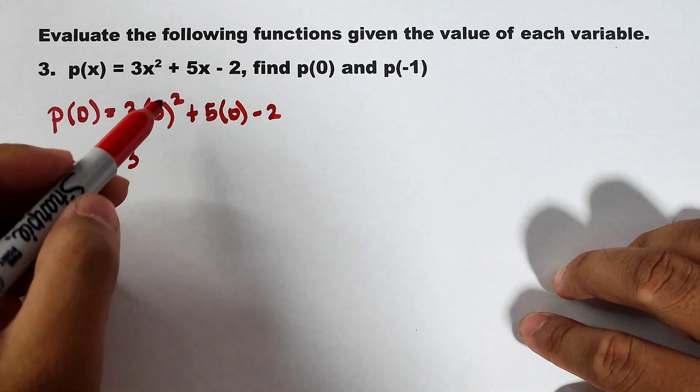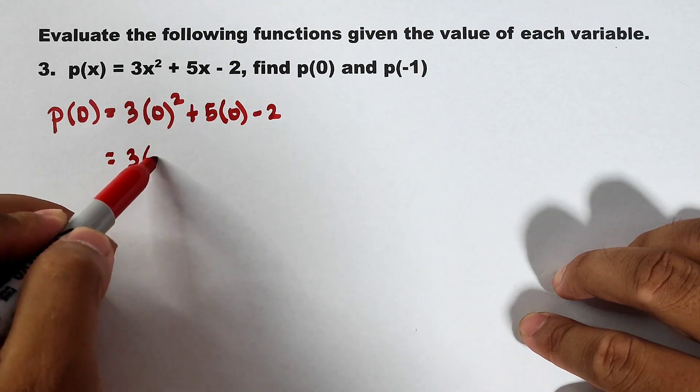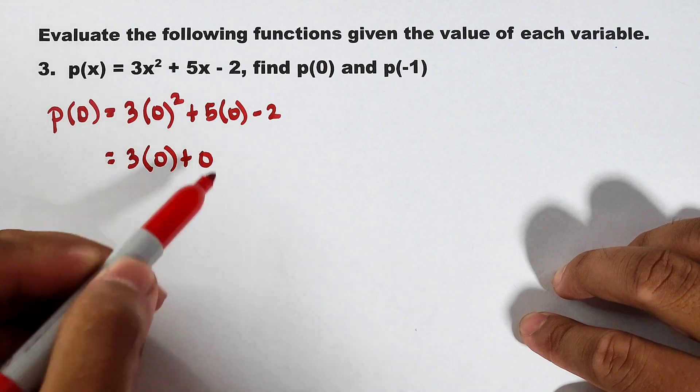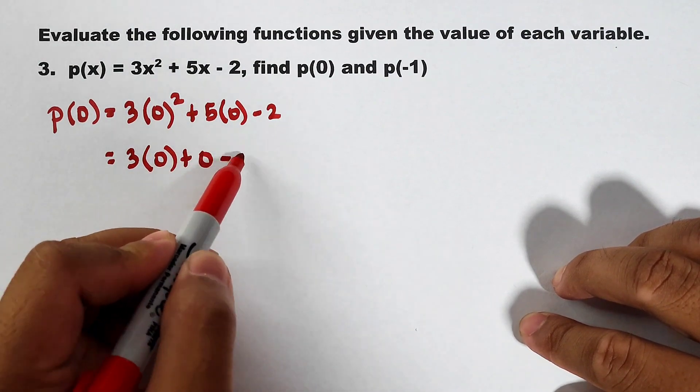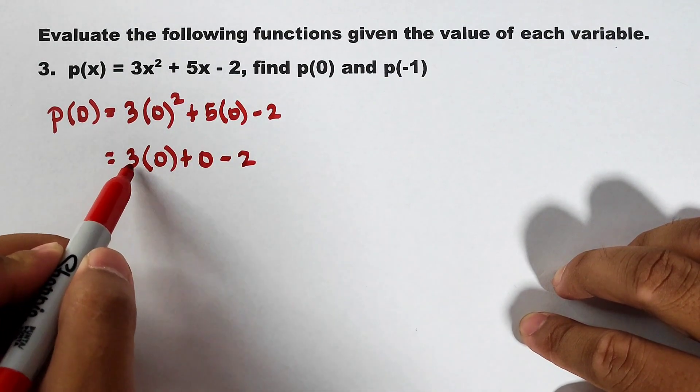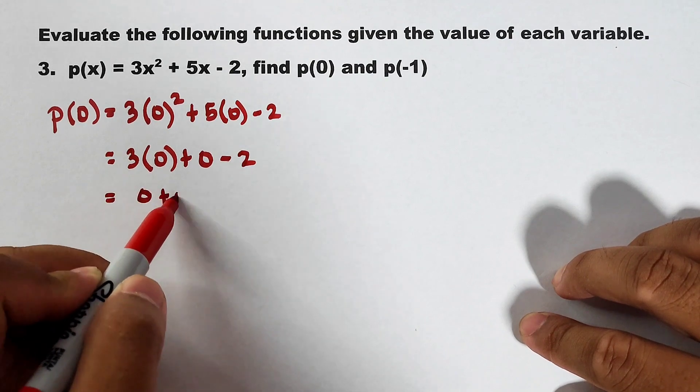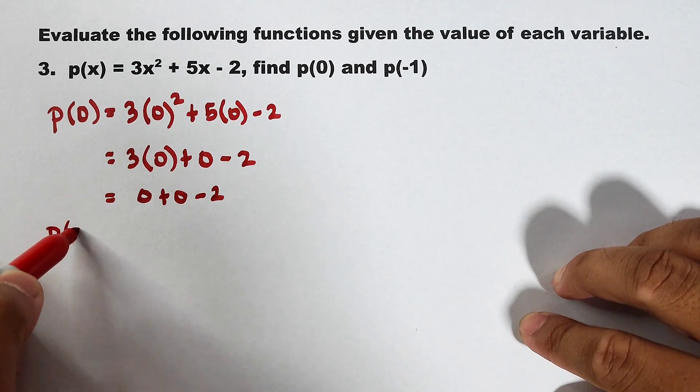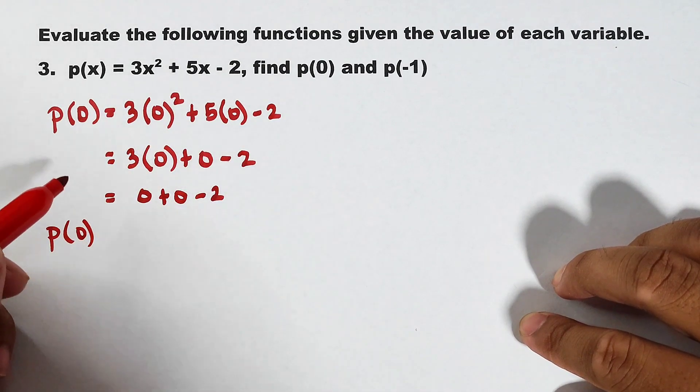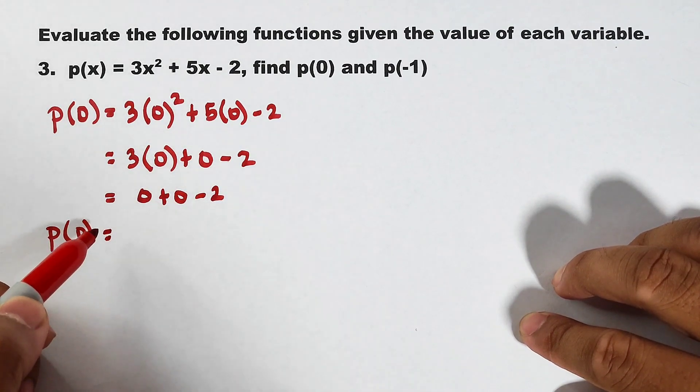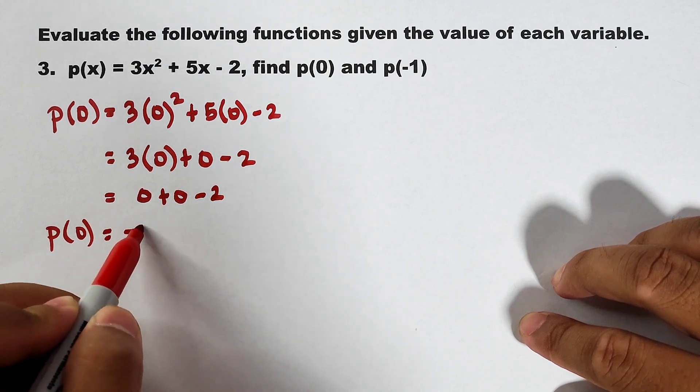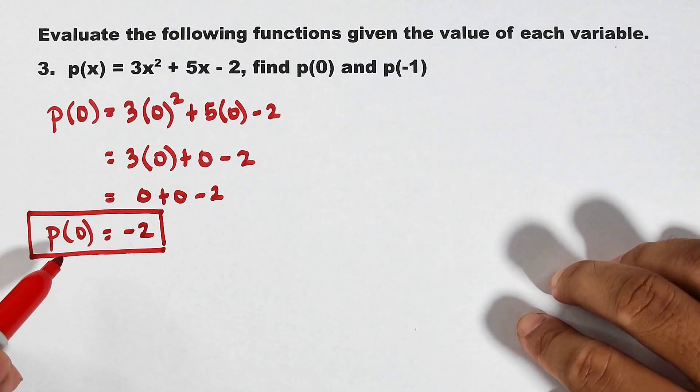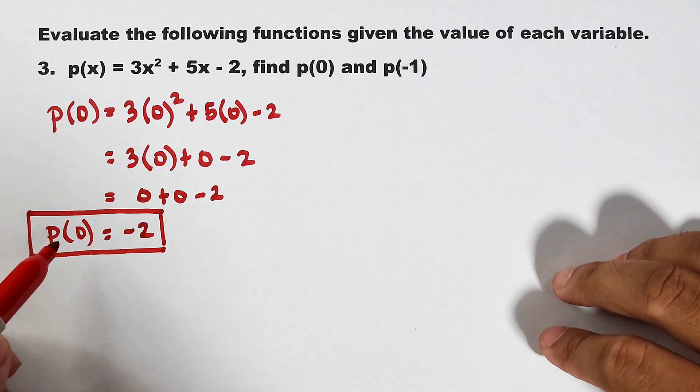Simplify. This is 3. This is 0 squared is 0. This is plus 0 because 5 times 0 is 0 minus 2. This one is also 0 plus 0 minus 2. And as you can see, your p of 0 is equal to negative 2. This is now the value of the function if the input is 0.